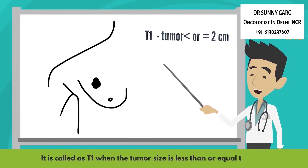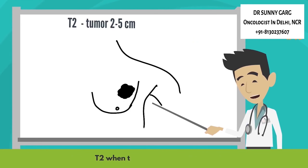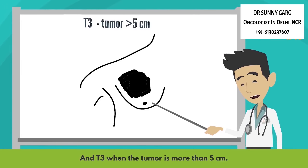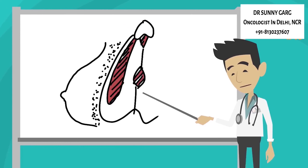It is called T1 when the tumor size is less than or equal to 2 cm. T2 when the tumor is 2 cm to 5 cm. And T3 when the tumor is more than 5 cm.